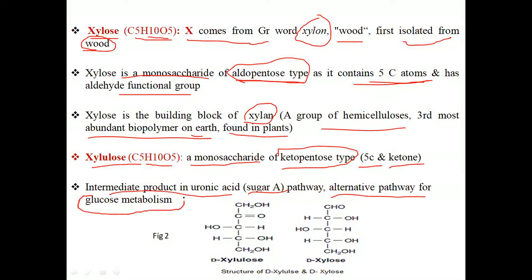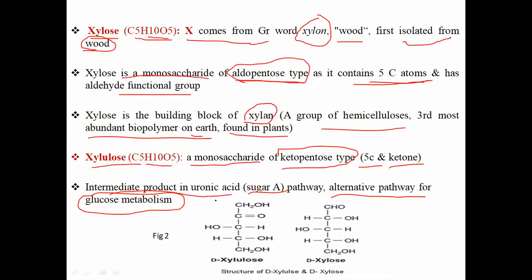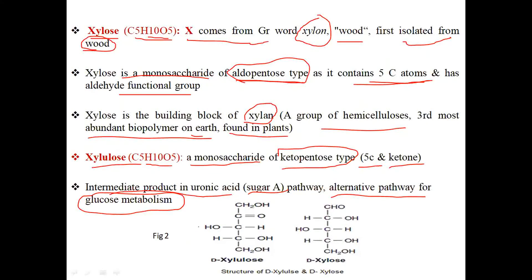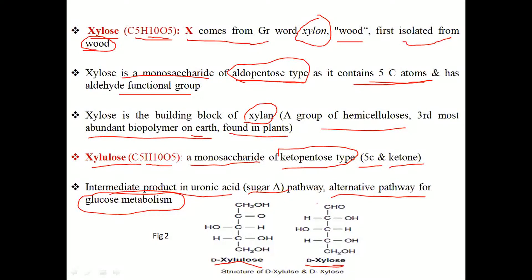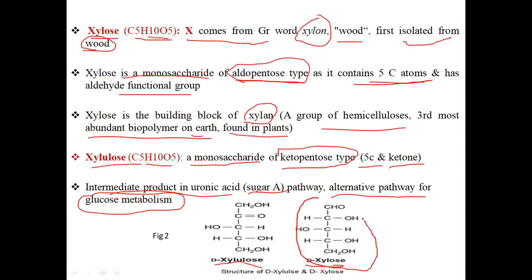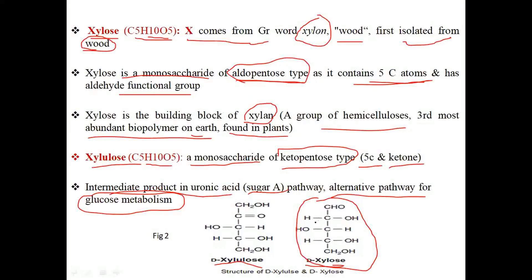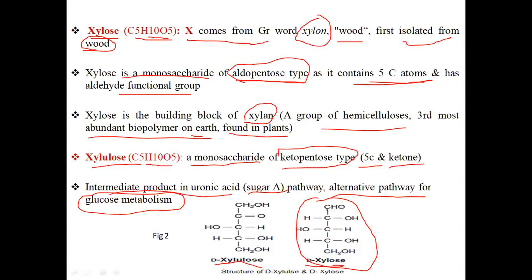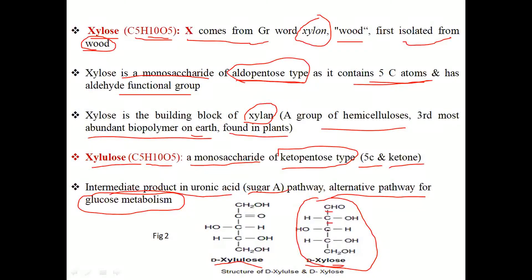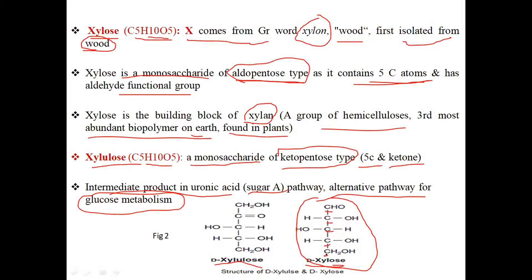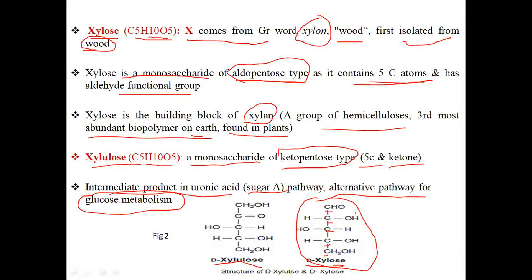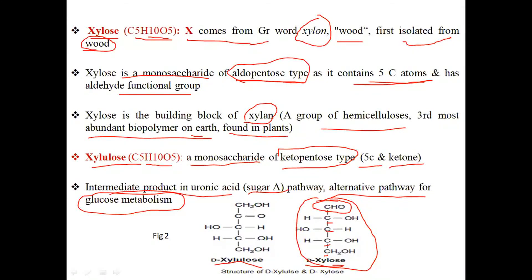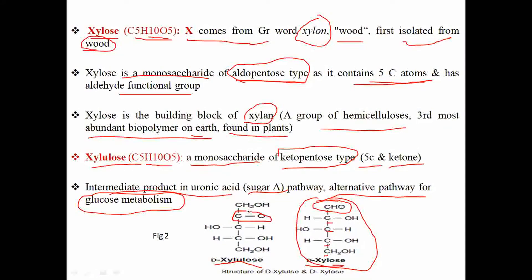In Figure 2 you can see D-xylulose and D-xylose. Both are five-carbon compounds: carbon one, carbon two, carbon three, carbon four, carbon five. The key difference is the functional group — in xylose, the functional group is an aldehyde, while in xylulose, the functional group is a ketone. This is the basic difference between xylose and xylulose.